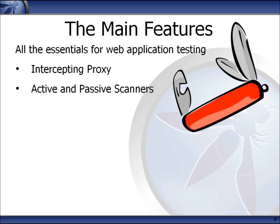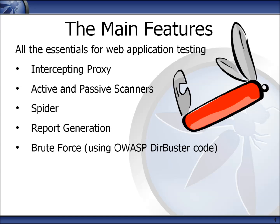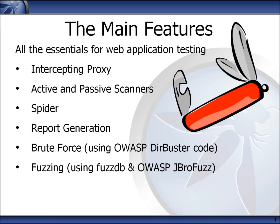The active scanner is different — it performs a wide range of attacks and should only be used on applications that you have permission to test. The spider can be used to crawl the application, for example to find pages you have either missed or which have been hidden from you. ZAP can generate reports on the issues that it found, including advice and links to more information about the problems and how to solve them. It can also find files even if there are no links to them using the brute force component, which is based on the OWASP DirBuster tool. It can also fuzz parameters, and includes fuzzing libraries from the JBroFuzz and FuzzDB tools.